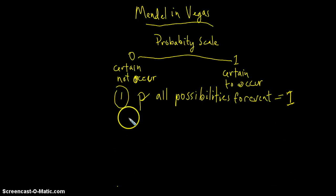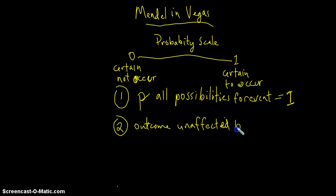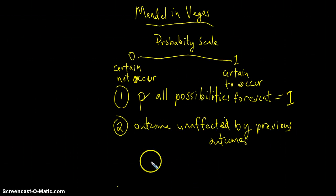Another important consideration when looking at probabilities is that the outcome of any particular event is unaffected by previous outcomes. Just because you flipped heads on one coin toss doesn't mean that it will necessarily be tails on the next coin toss.